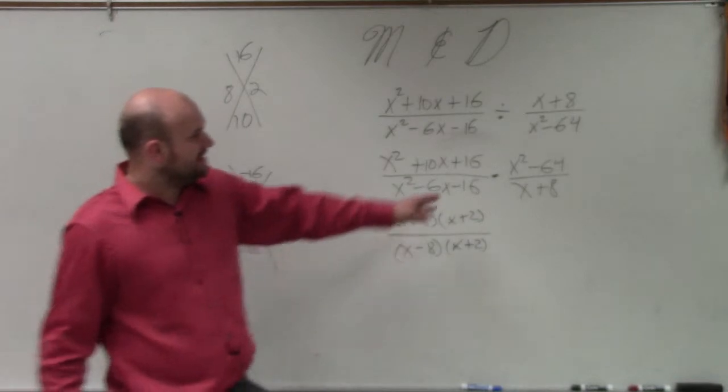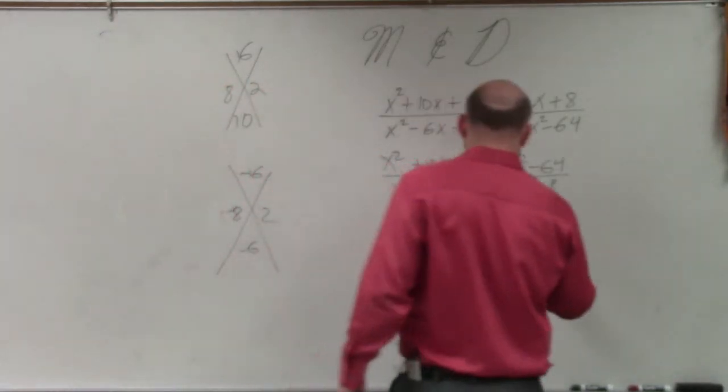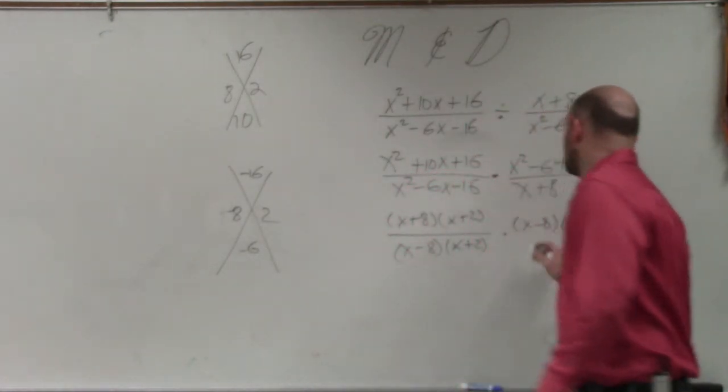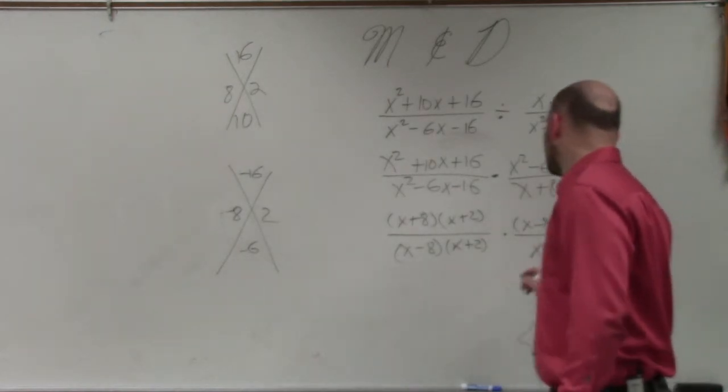Now, automatically, I see x squared minus 64. That's two squared numbers. So we can quickly understand that's going to be the difference of two squares. And then my other denominator, I cannot factor, so I leave that as x plus 8.